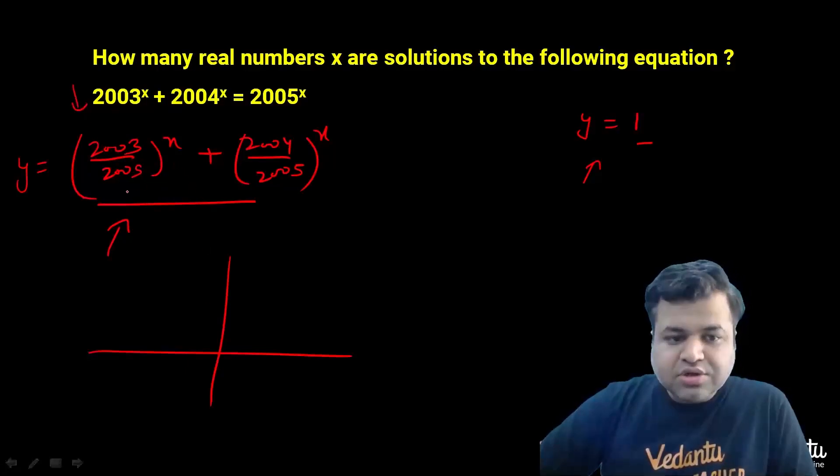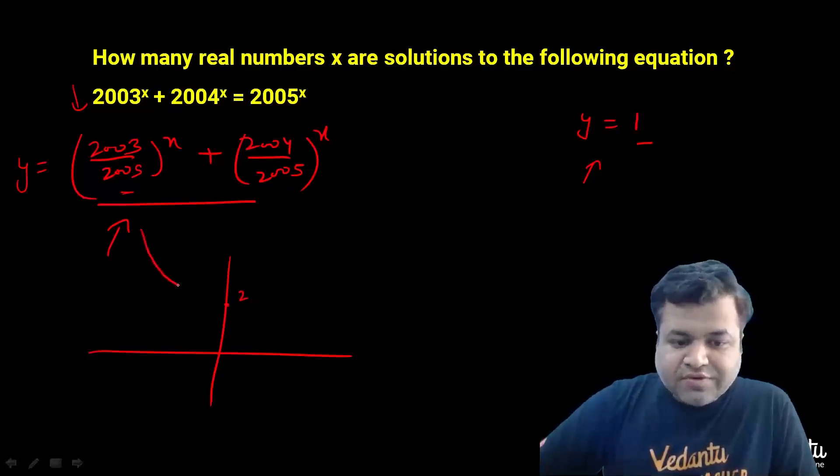At x equals 0, clearly the value is 2. And the graph will be like this.